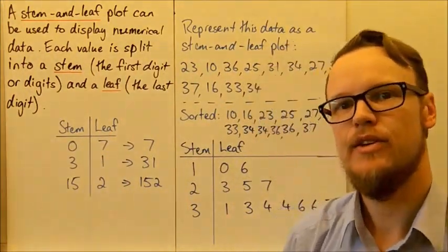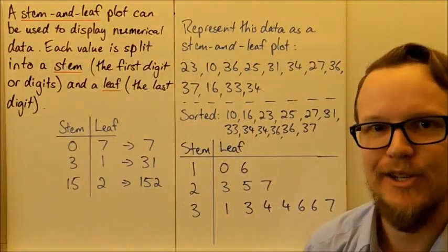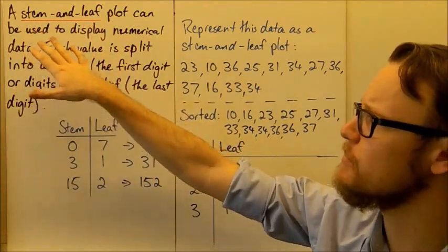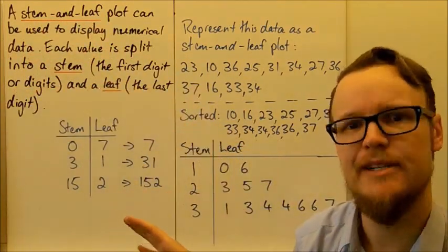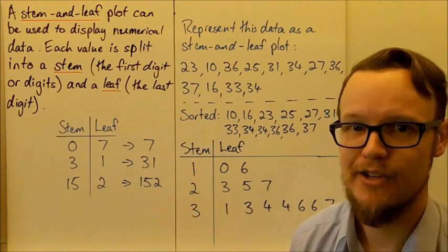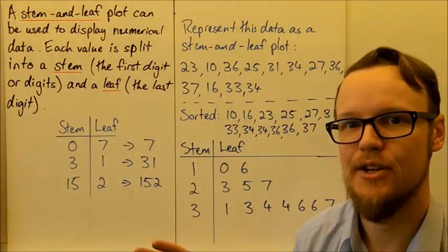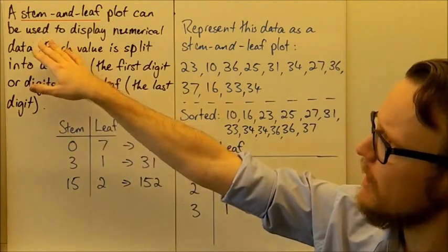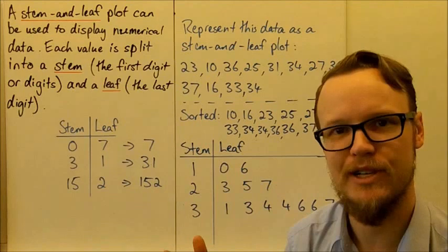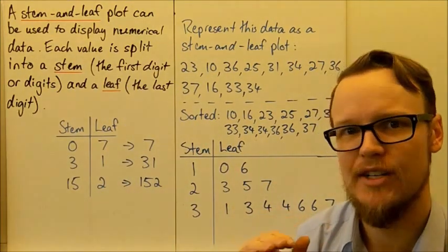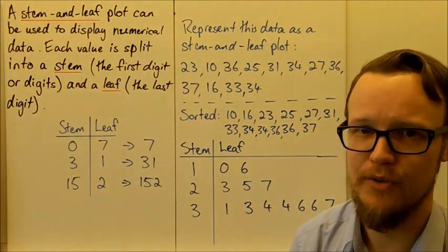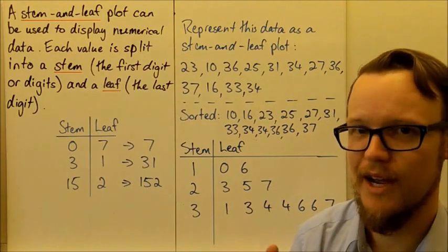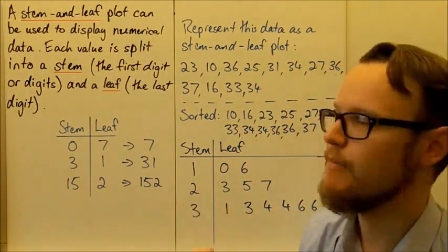The last different data display that we're going to look at is called a stem and leaf plot. A stem and leaf plot can be used to display numerical data. The last graph that we looked at showed categorical data, so data that's in different categories. But a stem and leaf plot is used to show numerical data, so any data that's just values, like the first graph that we saw, we could display that in a stem and leaf plot as well.